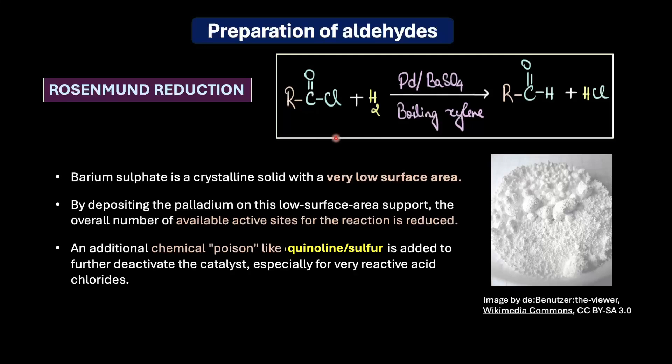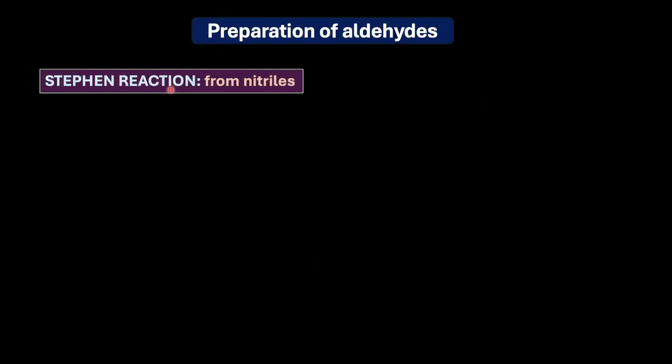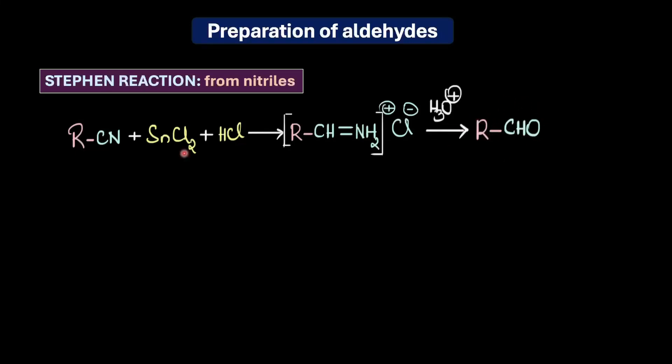Now let's look at how to prepare aldehydes from nitriles. For that, we'll discuss the Stephen reaction. Stephen reaction is another method to prepare aldehydes from nitriles. This is a two-step reaction where first the nitrile is reduced to an iminium chloride using stannous chloride SnCl2 and HCl, and this intermediate iminium chloride is then hydrolyzed with water to produce the final aldehyde. SnCl2 acts as a strong reducing agent.